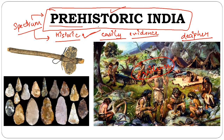Within historic India, we have ancient history including Vedic history, then medieval history, and then modern Indian history which covers India's freedom struggle and the arrival of Europeans — Dutch, English, Danes, French, Portuguese — all of whom came to India. All of this falls under modern Indian history.